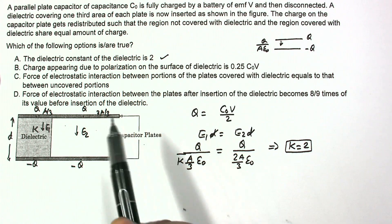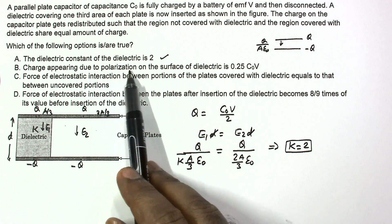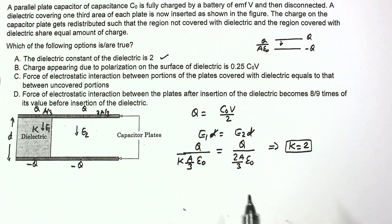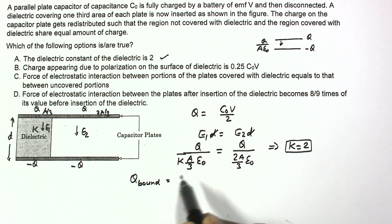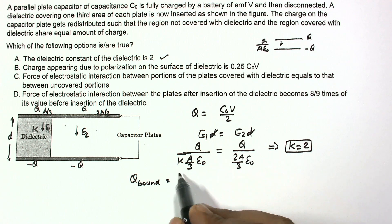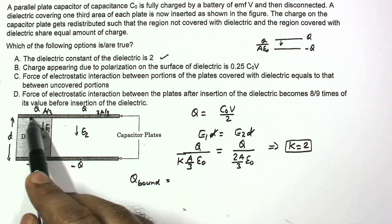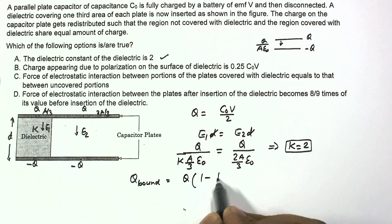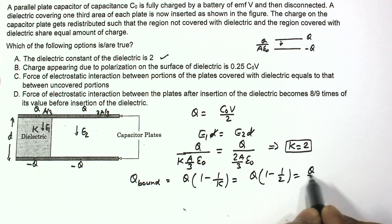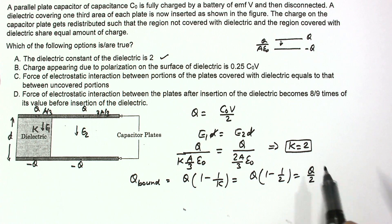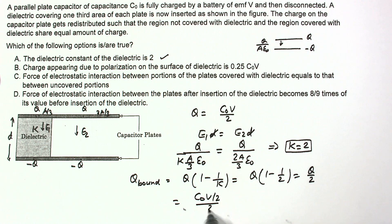Now calculate the charge appearing due to polarization on the surface of the dielectric. The induced or bound charge due to polarization is Q_bound = Q·(1 - 1/K), where K is the dielectric constant. Since K = 2 and Q = C₀V/2, this gives Q_bound = C₀V/2 × (1/2) = C₀V/4 = 0.25·C₀V.